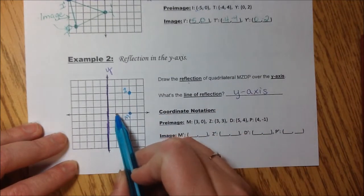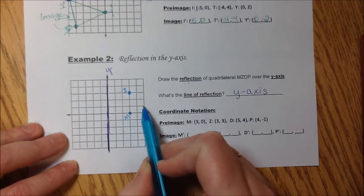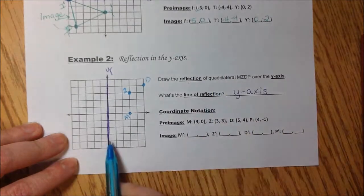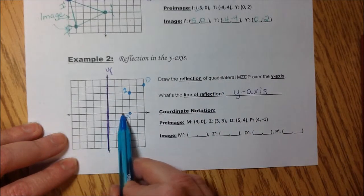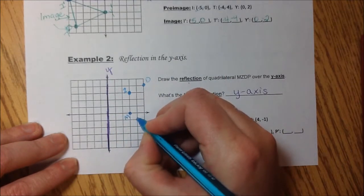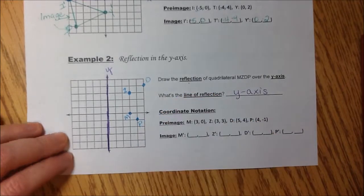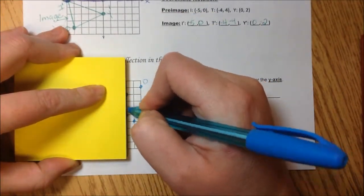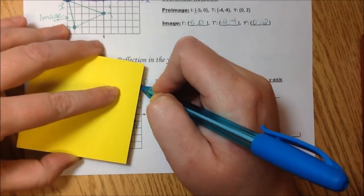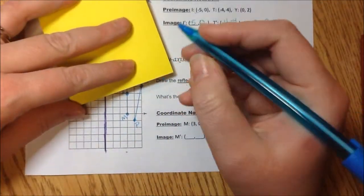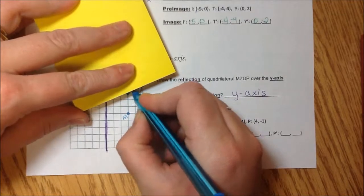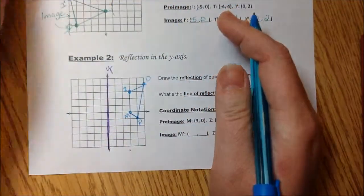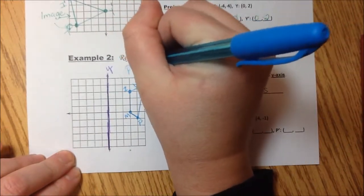D, 5, 4, 1, 2, 3, 4, 5, 1, 2, 3, 4. And P is 4, negative 1. 1, 2, 3, 4, negative 1. P. Connect our points. And this is before, so we're going to go ahead and label this our pre-image.